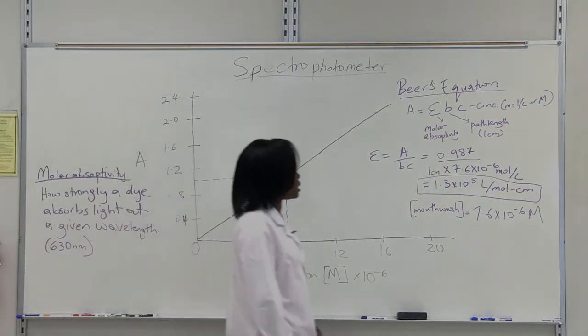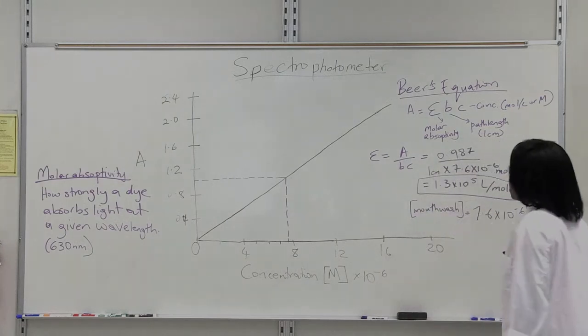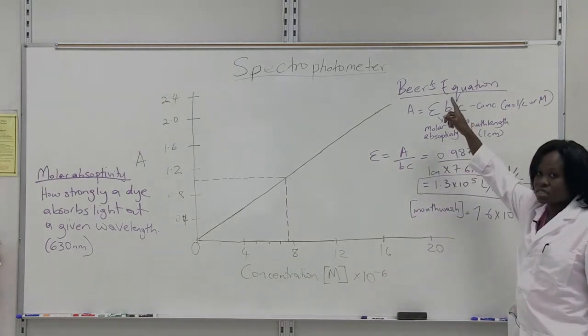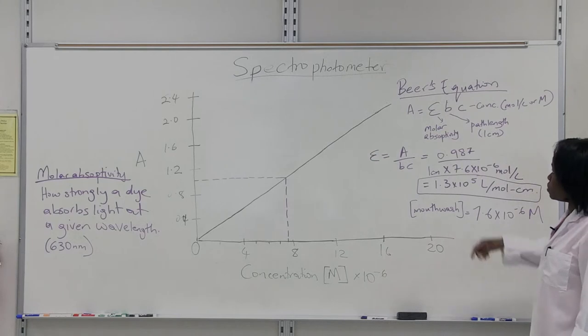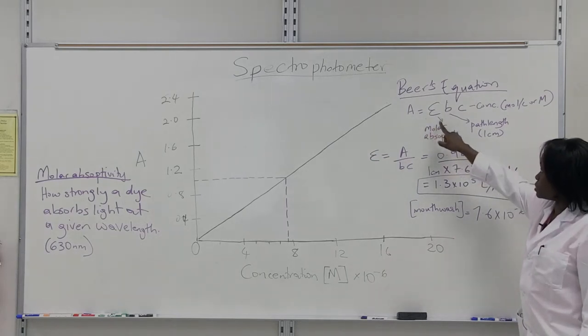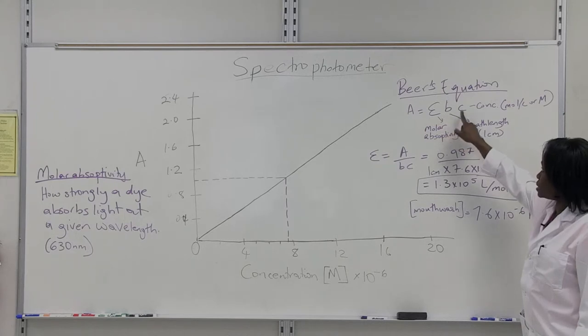So there's an equation that we can use to determine our molar absorptivity. The equation is called Beer's equation. So it says A is equal to epsilon times B times C.